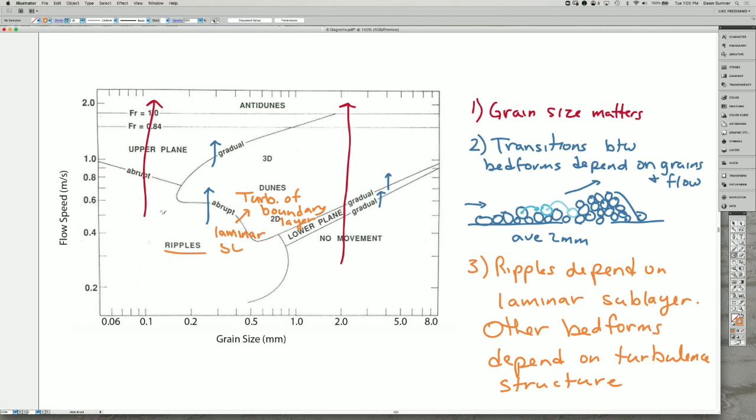And the same thing going from ripples into upper planar. You tend not to get dunes in this transition because the grains aren't large enough, the grains aren't heavy enough to pile up into dunes. Instead, they tend to have very, very long trajectories down the flow, which tends to give you plain regrets.